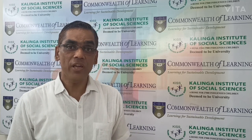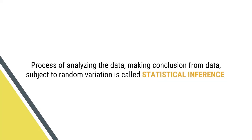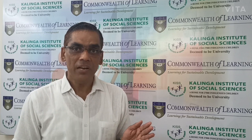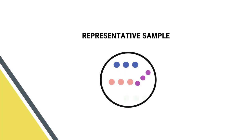Statistical techniques are very important. The process of analyzing the data and making conclusions from the data subject to random variation is called Statistical Inference. We always deal with data. Data constitute the sample, not the population. For any study, it is impossible, impractical, and even unnecessary to consider the whole population. Therefore, in any study, we always consider the sample that rightly represents the population — we call it a representative sample.